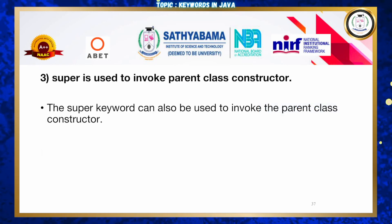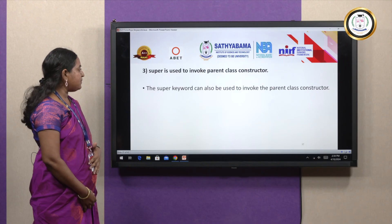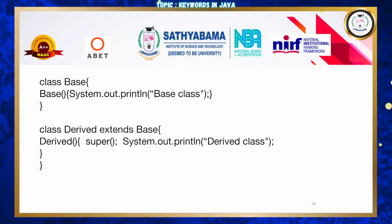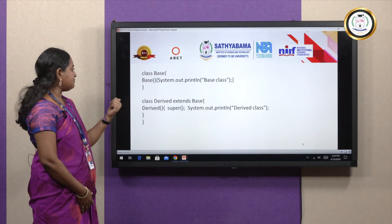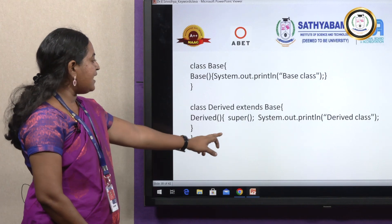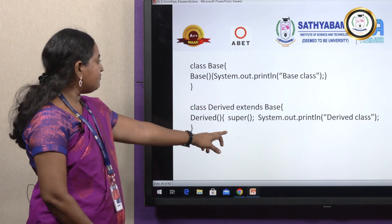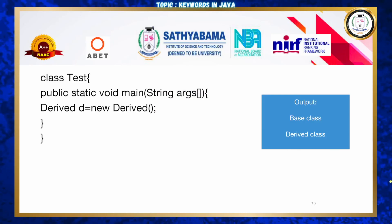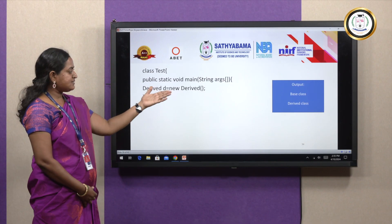Third — super to invoke the parent class constructor. The super keyword can also call the parent class constructor. Class Base has a constructor with a string statement. Class Derived has a constructor that calls 'super()' to invoke the base class constructor. In the test class, creating 'Derived d = new Derived()' automatically accesses the base class constructor first, giving output 'base class' and then 'derived class'.